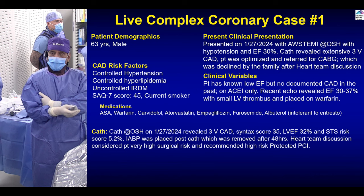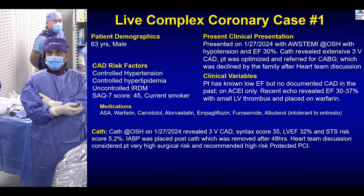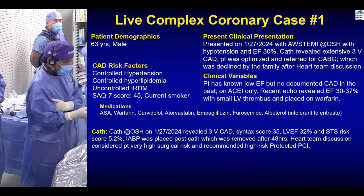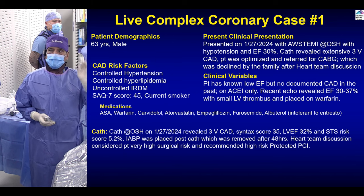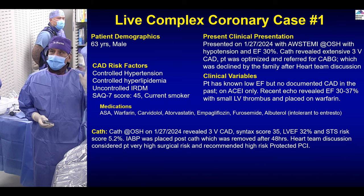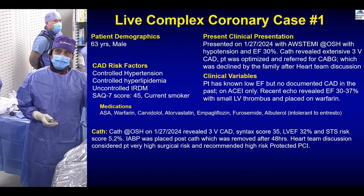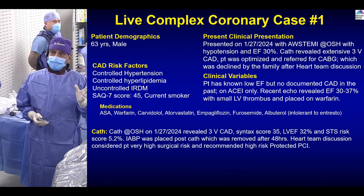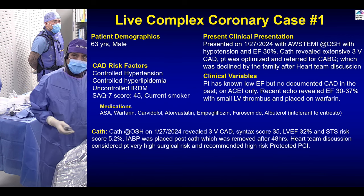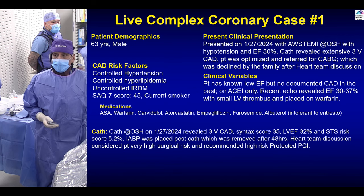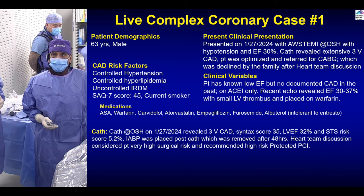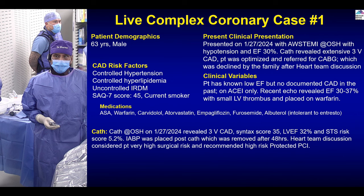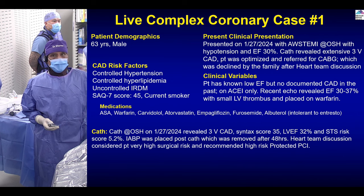EF continued to remain reduced — several EF measurements between 30 to 37%. Echo also showed LV apical thrombus, for which the patient was started on warfarin since January 29th-30th until a few days ago. When we brought him here, echo showed no LV thrombus, but an ejection fraction of 32%. So this is a patient with three-vessel disease.